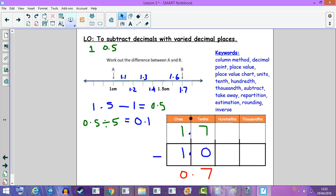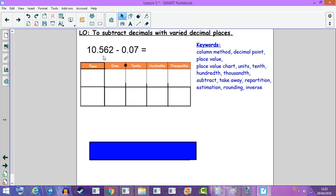Let's move on to the next question. Here we have 10.562 take away 0.07, and we're going to place the numbers in the correct columns. We could use inverse to check our answer in the end. According to the decimal places, we have the decimal point: 1 ten, 0 ones, 5 tenths, 6 hundredths, and 2 thousandths. In here we have 0 ones, 0 tenths, and 7 hundredths. We're going to subtract them.